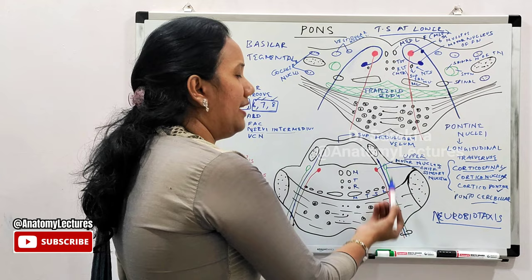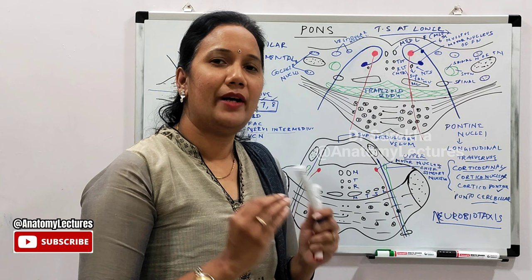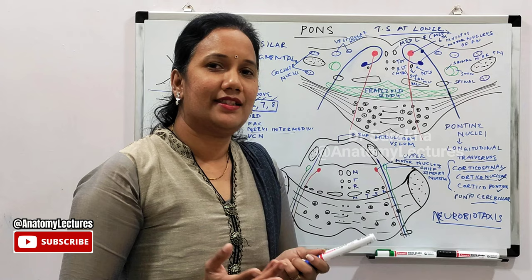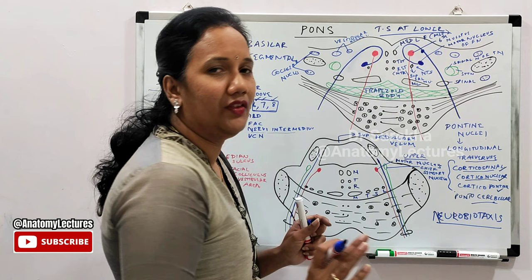A mnemonic to remember the four lemnisci from medial to lateral is 'My Tongue Speaks Loud': M — medial lemniscus, T — trigeminal lemniscus, S — spinal lemniscus, L — lateral lemniscus. The only cranial nerve nuclei related at this level are the fifth cranial nerve nuclei.